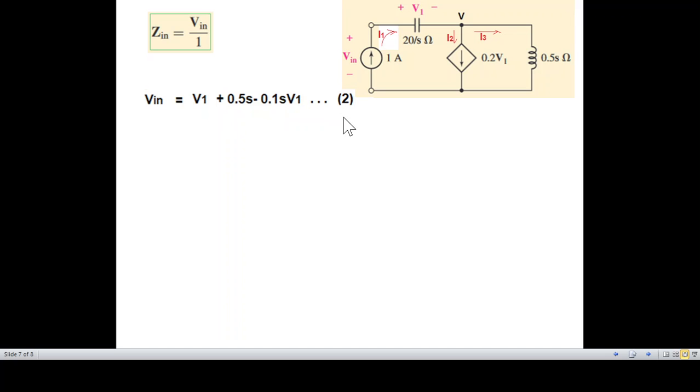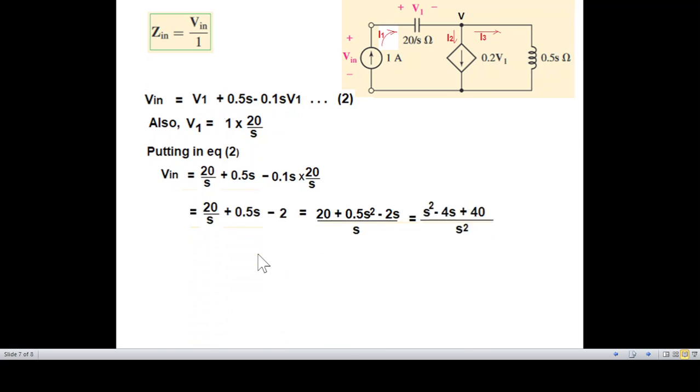So we were here. Now if you look at the circuit, V1 is current multiplied by this impedance. Current is 1, so 1 multiplied by 20 over s. So we'll replace these V1s by this value. Replacing and solving a couple of steps, I hope you can follow these steps.